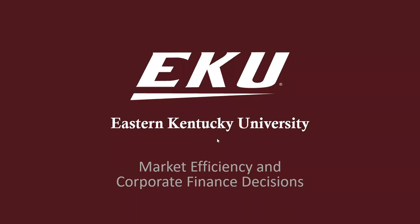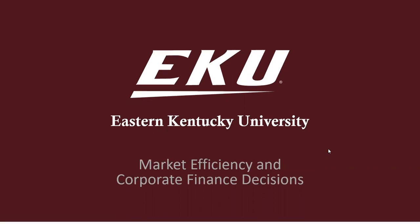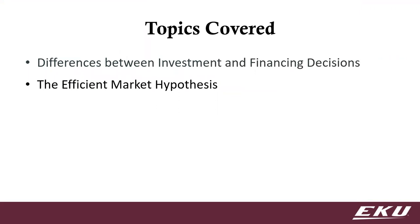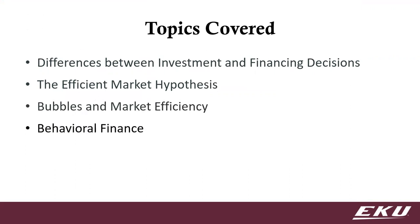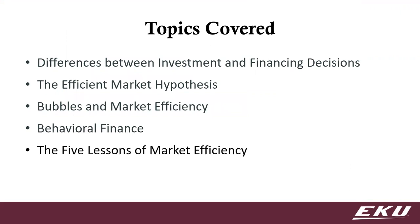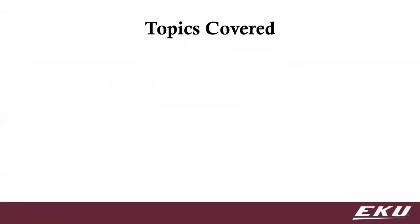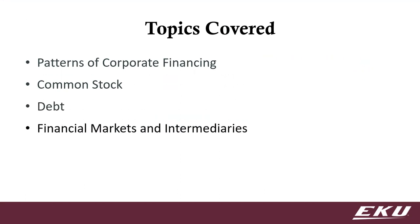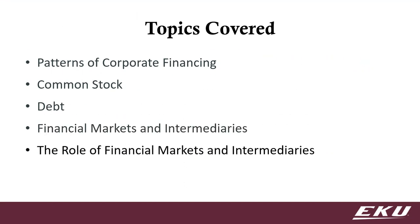This will be a discussion of market efficiency and some corporate finance decisions. The topics covered today include the difference between an investment and a financing decision, the efficient market hypothesis, bubbles and market efficiency, behavioral finance, and five lessons of market efficiency. Then we'll move on to corporate finance decisions, covering patterns of corporate financing, a brief discussion on stock and debt, and financial markets and intermediaries.